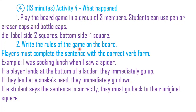Write the rules of the game on the board. Players must complete the sentence with the correct verb form. Example: 'I was cooking lunch when I saw a spider.' If a player lands at the bottom of a ladder, they immediately go up. If they land at a snake's head, they immediately go down. If a student says the sentence incorrectly, they must go back to the original square.